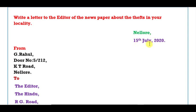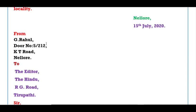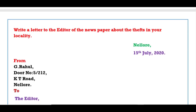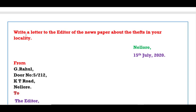The writer's address: G. Rahul, Door Number 5, 212, KT Road, Nellore. Then the recipient's address: To the Editor, The Hindu, RG Road, Thirupati. These two addresses are in the letter. Write a letter to the editor of the local newspaper — mention the name of the local paper.